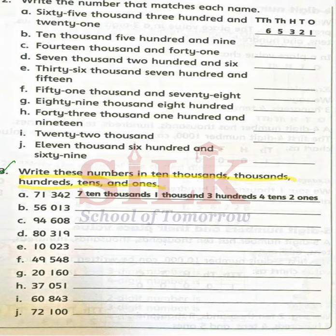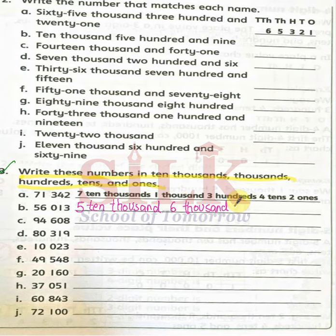56,013. Here is 5 in the ten-thousands place, so 5 × 10,000. Then 6,000. And 13 — we skip 100 since there are zero hundreds, and write 1 ten and 3 ones.